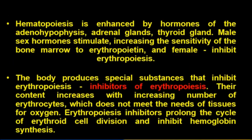Hematopoiesis is enhanced by hormones of the adenohypophysis, adrenal glands, and thyroid glands. Male sex hormones stimulate and increase the sensitivity of bone marrow to erythropoietin, while female hormones inhibit erythropoiesis. The body also produces special substances that inhibit erythropoiesis — inhibitors of erythropoiesis.